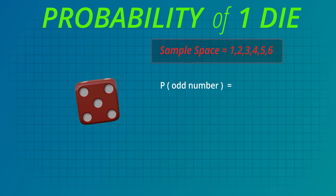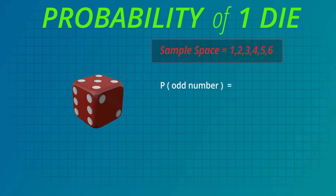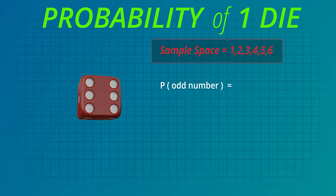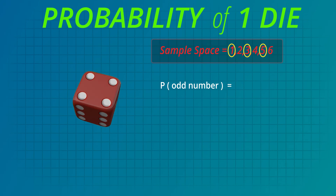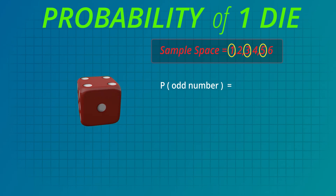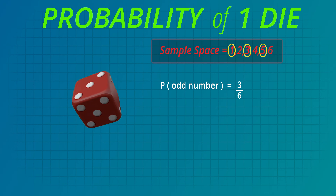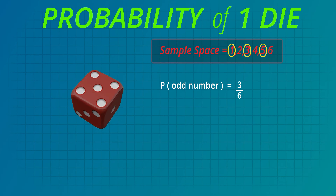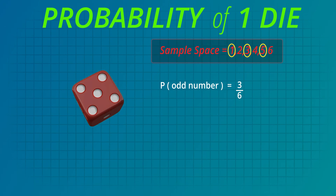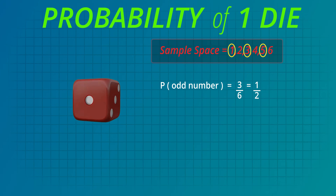What is the probability that the die will show an odd number? The odd numbers on a die are 1, 3, and 5, so there are 3 possible outcomes out of the 6 sides. That's 3 out of 6, which we can simplify to one half.